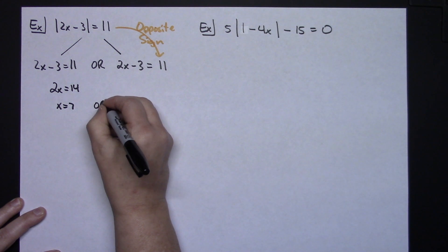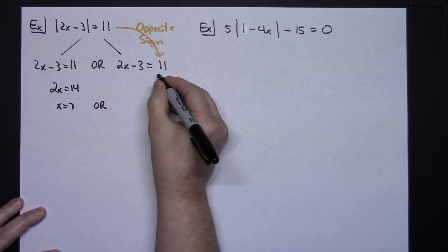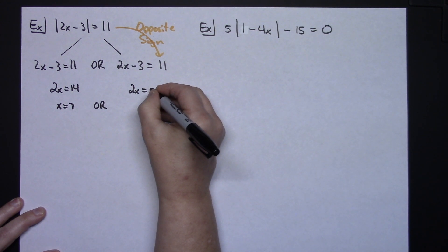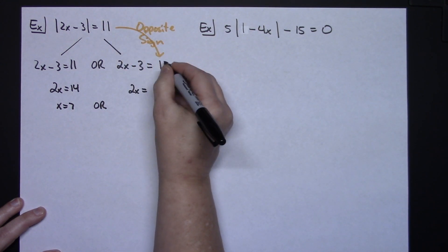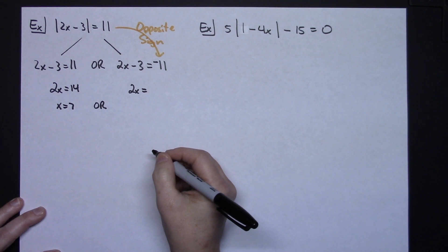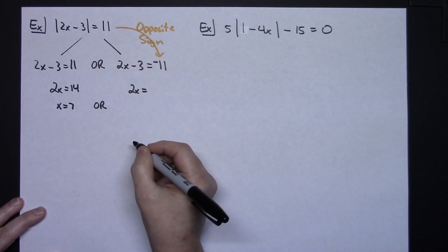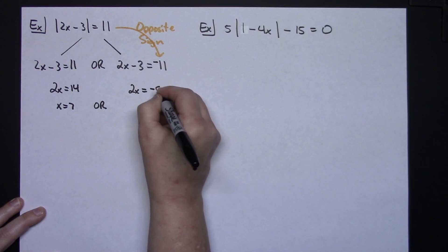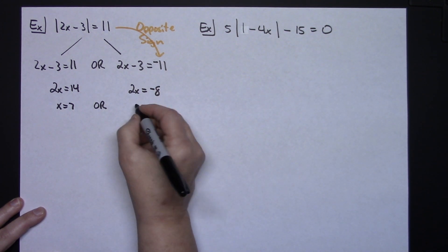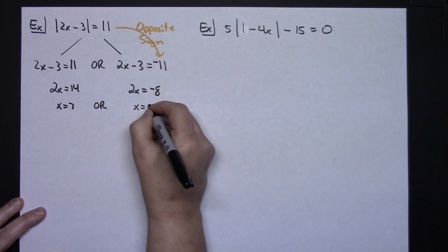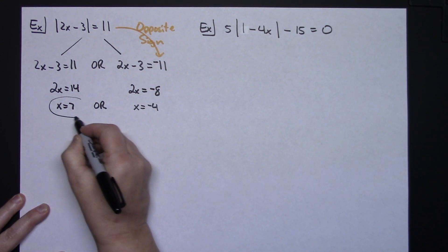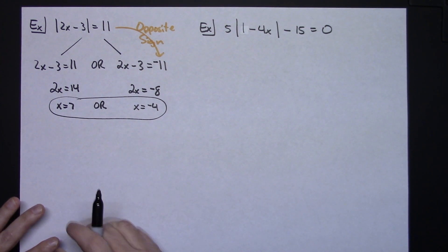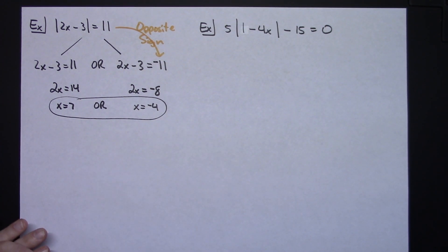I bring the OR down and write the second equation: 2x minus 3 equals negative 11, remembering to take the opposite sign. Adding 3 to both sides gives 2x equals negative 8, and dividing both sides by 2 gives x equals negative 4. If you're in a beginning Algebra 1 class, they may allow you to stop right there: x equals 7 or x equals negative 4.